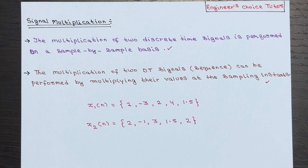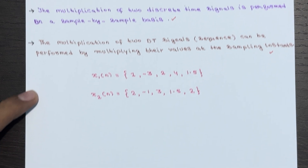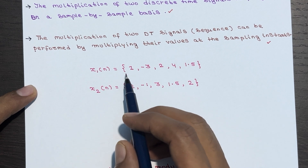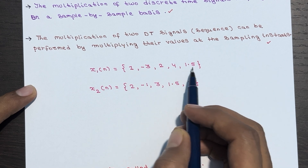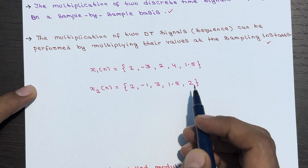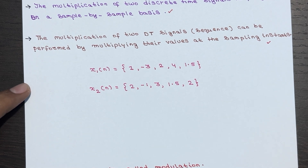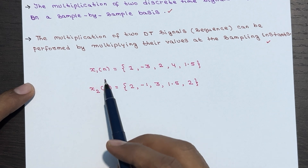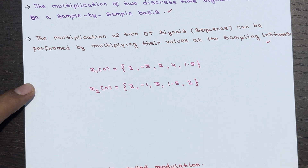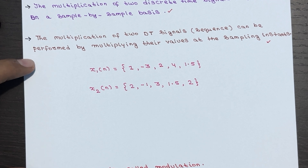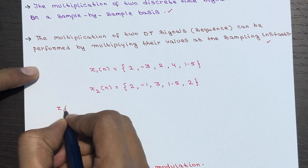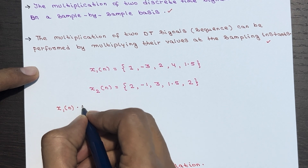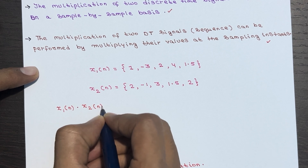Let's look at an example. X1(n) has values: 1 at n=0, then -3, 2, 4, 1.5. X2(n) is another signal given in sequence representation. We have two signals, X1(n) and X2(n), and we want to calculate their product — that is, we want to perform X1(n) multiplied by X2(n).